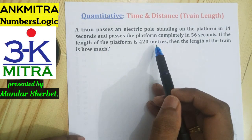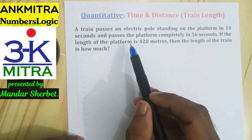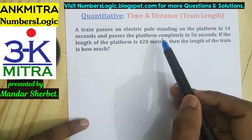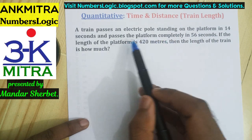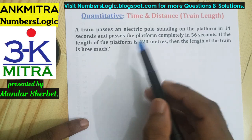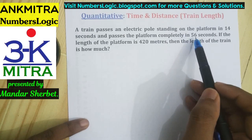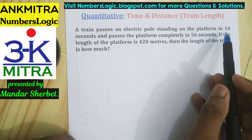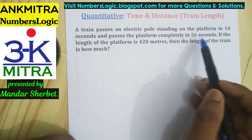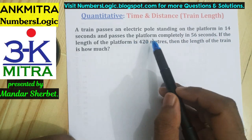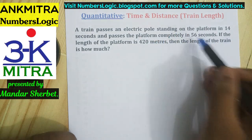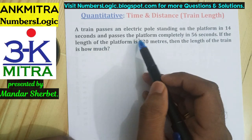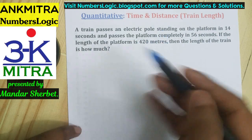When the train passes the platform, both the length of the platform and the length of the train are covered in 56 seconds. The train's length itself takes 14 seconds, so the remaining 42 seconds — that is, 56 minus 14 — will be the time required to cross only the platform.